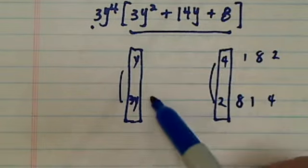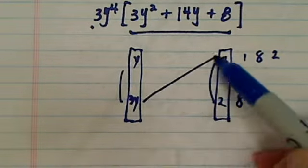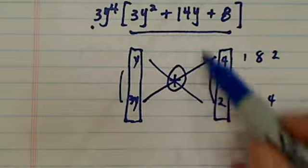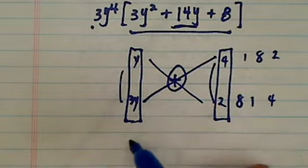But 2 and 4 over here gives you the correct combination because when you cross multiply and then add them together, that gives you the 14y. Let's try it out.